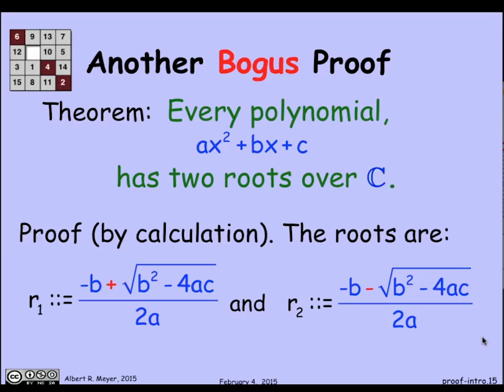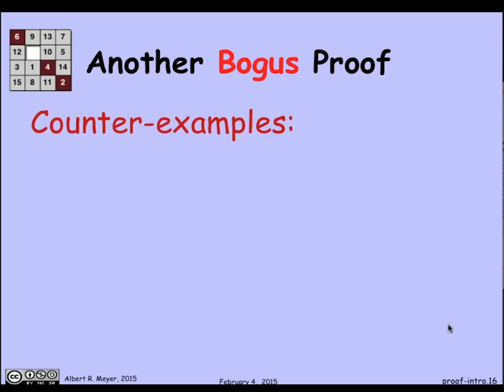Well, that's not true. We haven't proved it. This is a proof by calculation that has problems. What's the problem? Let's look at a counter example. What about the polynomial 0x² + 0x + 1? It doesn't have any roots. It's just a constant 1 which never crosses the origin. So it's got no roots.